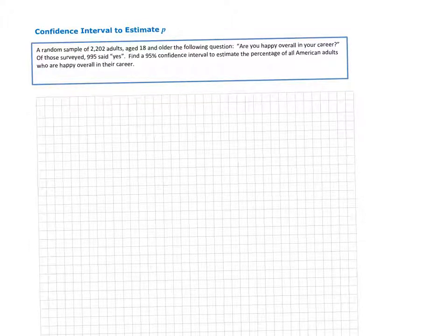In this video I'll show you how to create a confidence interval to estimate a population proportion. In this problem, a random sample of 2,202 adults age 18 and over were asked, are you happy overall in your career? Of those surveyed, 995 said yes.